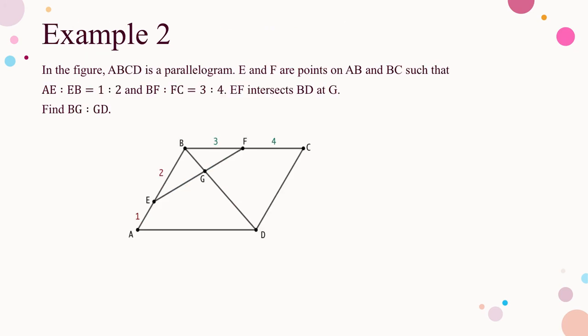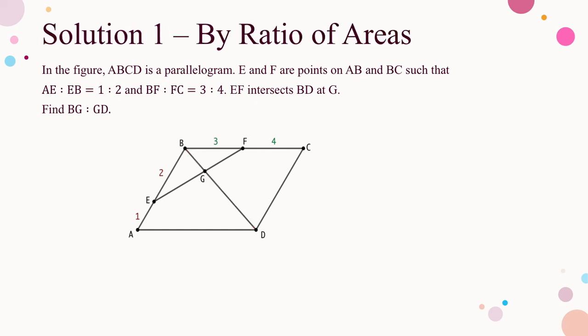Here is another example for consolidation. Given a parallelogram, the ratios are marked in the diagram. Find the ratio BG to GD. You may think about this question on your own first. The first solution is done by ratio of areas. Draw the diagonal AC and denote the intersection of the two diagonals by M. As diagonals bisect each other, M is the midpoint of AC, so the ratio AM to MC is 1 to 1. The configuration of triangle ABC is the same as example 1. I leave the ratio-of-areas calculation as an exercise — you may pause the video.